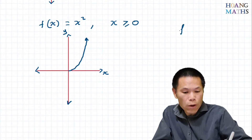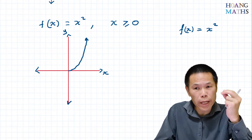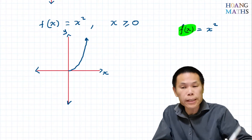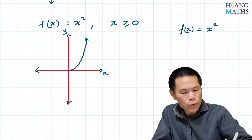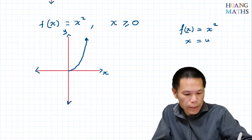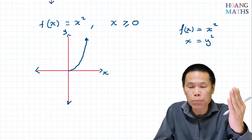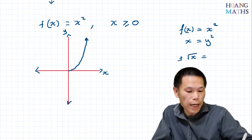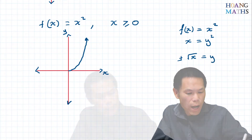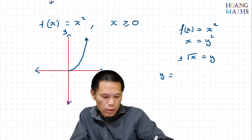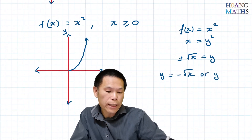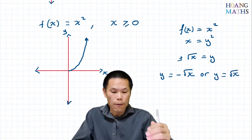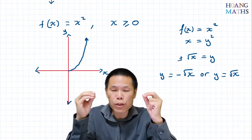So f of x equals x squared. We interchange x and y — remember f of x is just like y — so we replace x and y to get x equals y squared. To make y the subject, we square root both sides. Every time we square root something we must write plus or minus, so y equals plus or minus square root of x. We have two answers, so we need to pick the correct one.